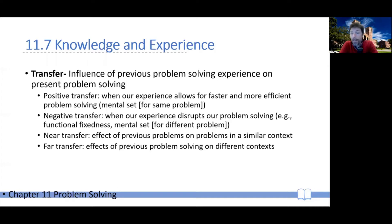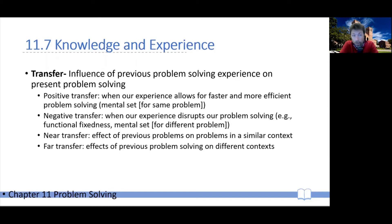Conversely, you get negative transfer when your experience with prior problems is actually hampering your ability to resolve a new problem efficiently and quickly. An example would be applying a mental set from a different problem — one that doesn't help you solve the next problem. In a sense, functional fixedness is also an example of negative transfer, although it's more broadly about the knowledge you have and how you interpret or see the function of certain objects.